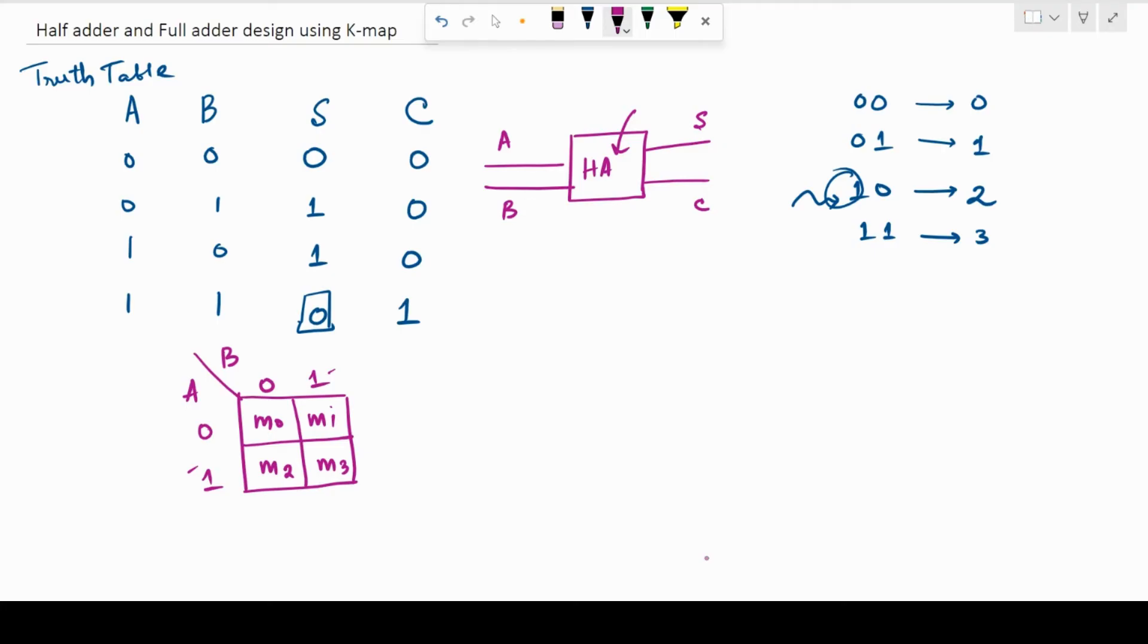Now, I am going to fill these squares with the binary numbers that the sum is going to assume as the inputs change. So, let me write out the grid again.